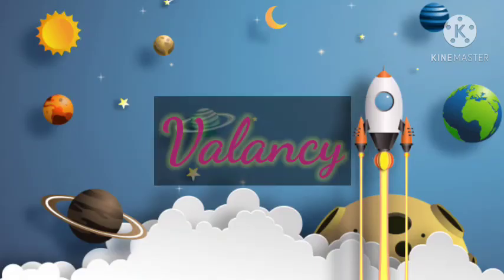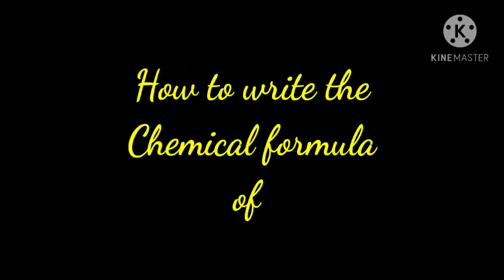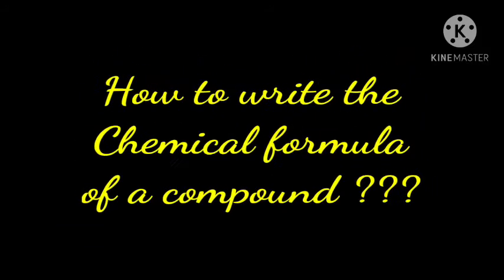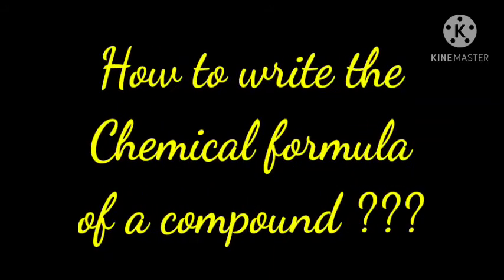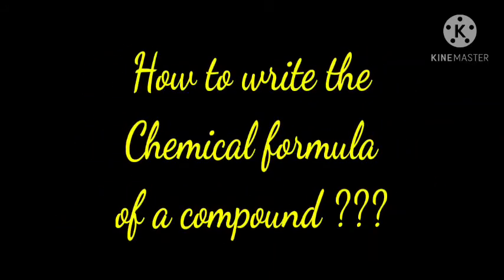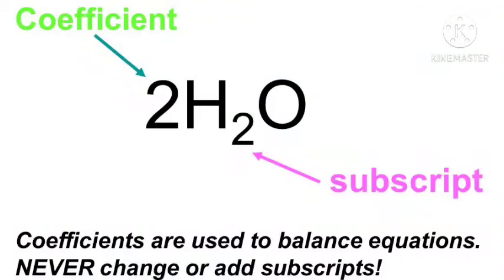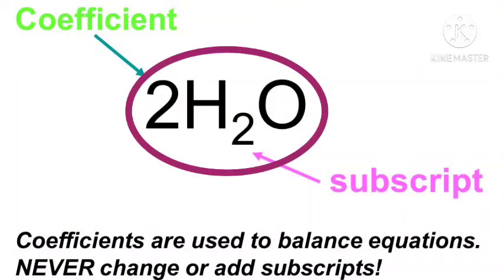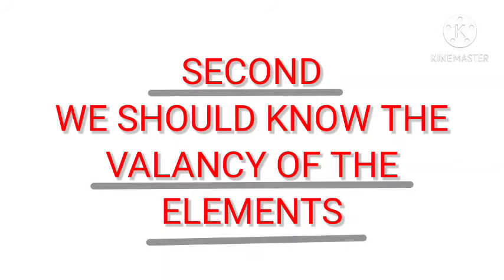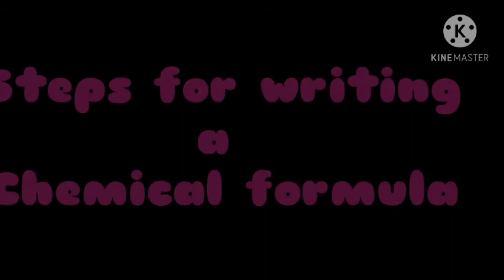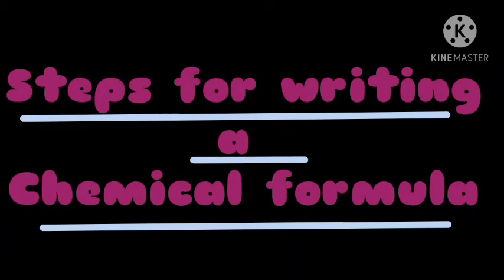So today let us understand how to determine or how to write the chemical formula of a compound. Children, for writing the chemical formula, we should know the symbols of the constituent elements and their respective valencies. So for determining the chemical formula of a compound, we should follow some steps.